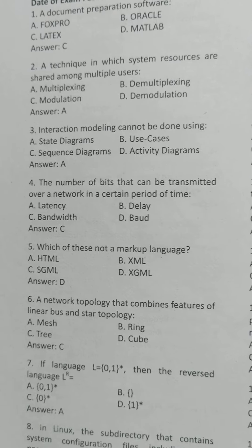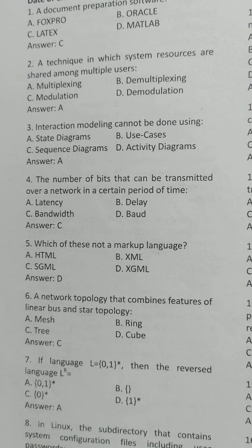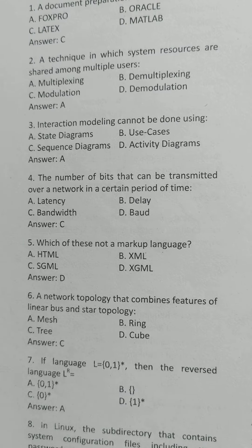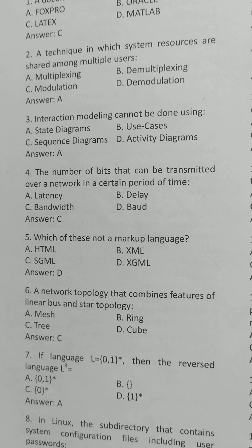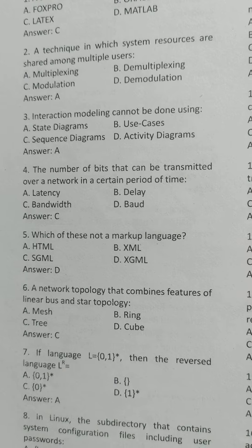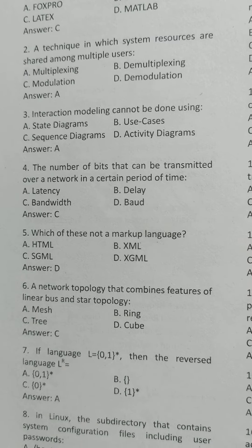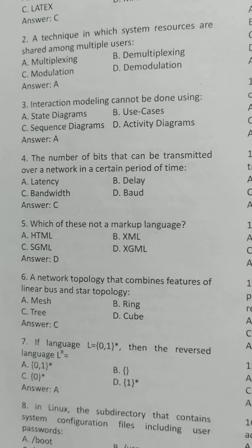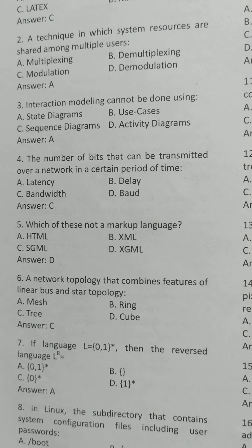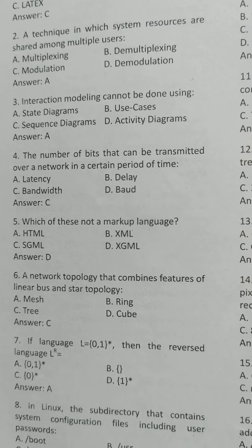Interaction modeling cannot be done using which option? The correct answer is State diagram. The number of bits that can be transferred over a network in a certain period of time is Bandwidth.